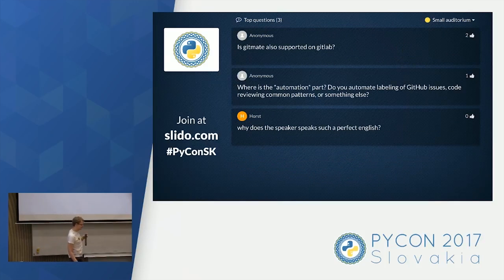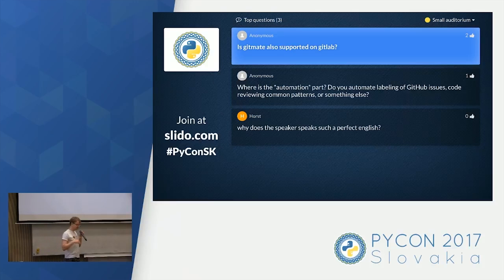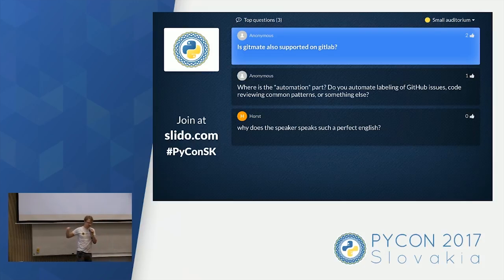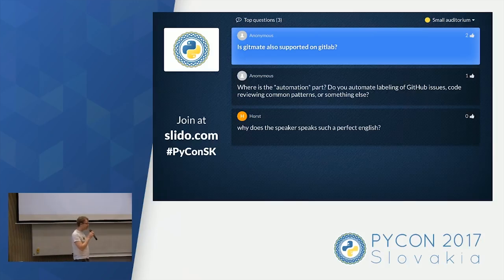Next question: is Gitmate also supported on GitLab? Gitmate is currently a prototype. We're working on the new MIT-licensed community version, and it will be supported on GitLab — we expect it to be working in about 1.5 months. If anyone wants to contribute, that timeline can be sped up.